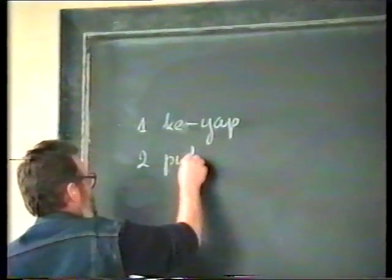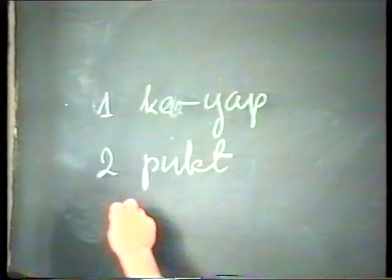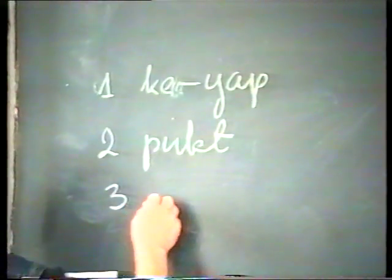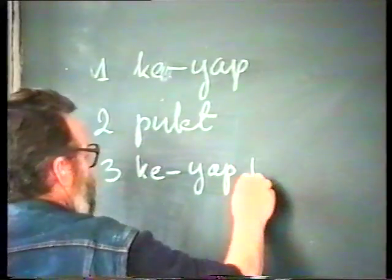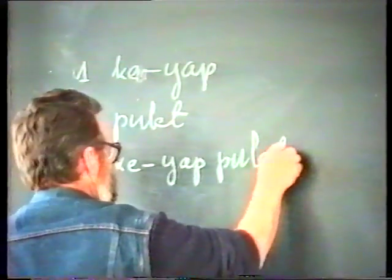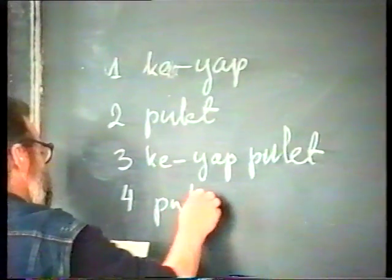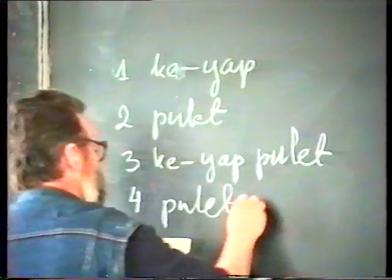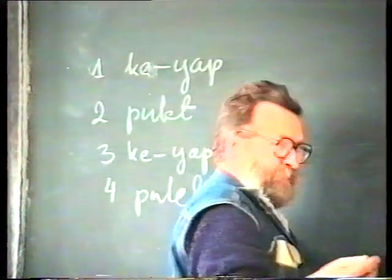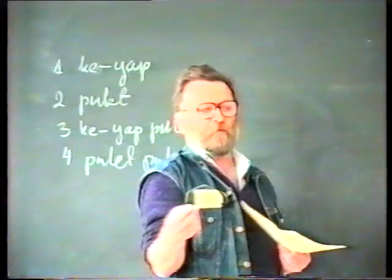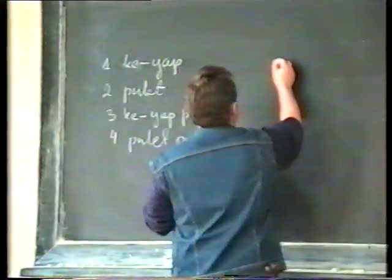Twójka nazywała się Pulle, chyba przez jedno T. W trójce było Keja, Pulle. W czwórce było Pulle.